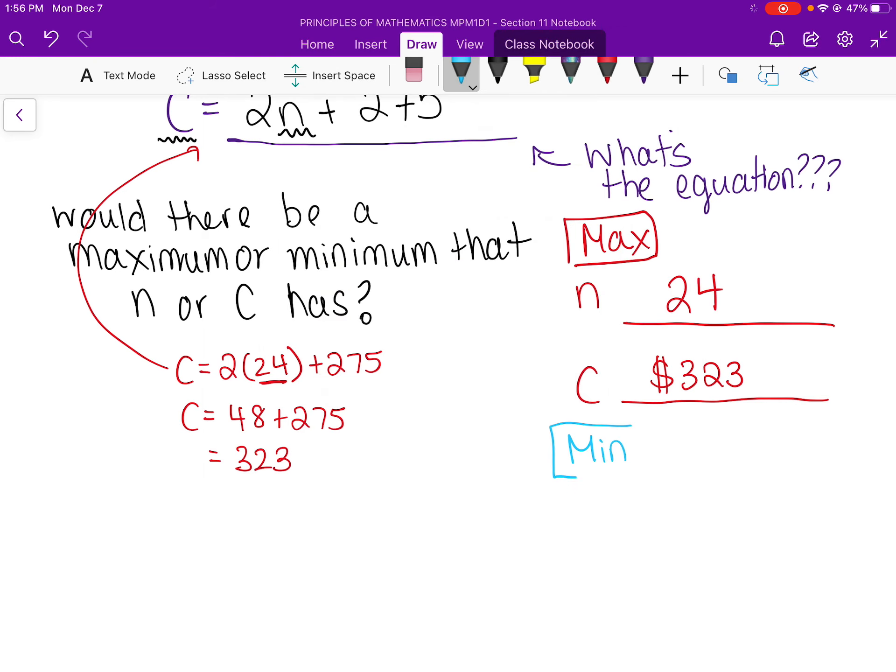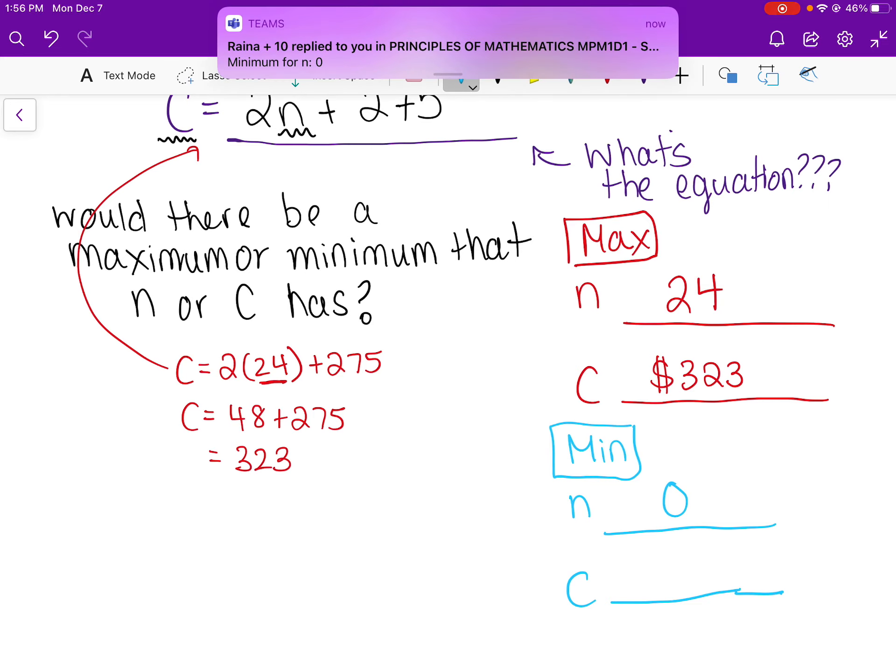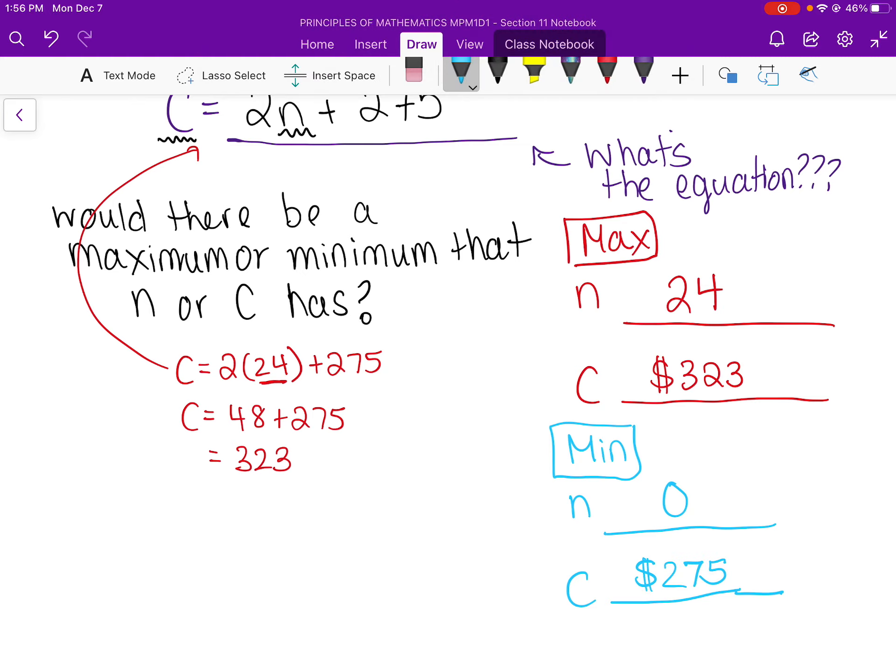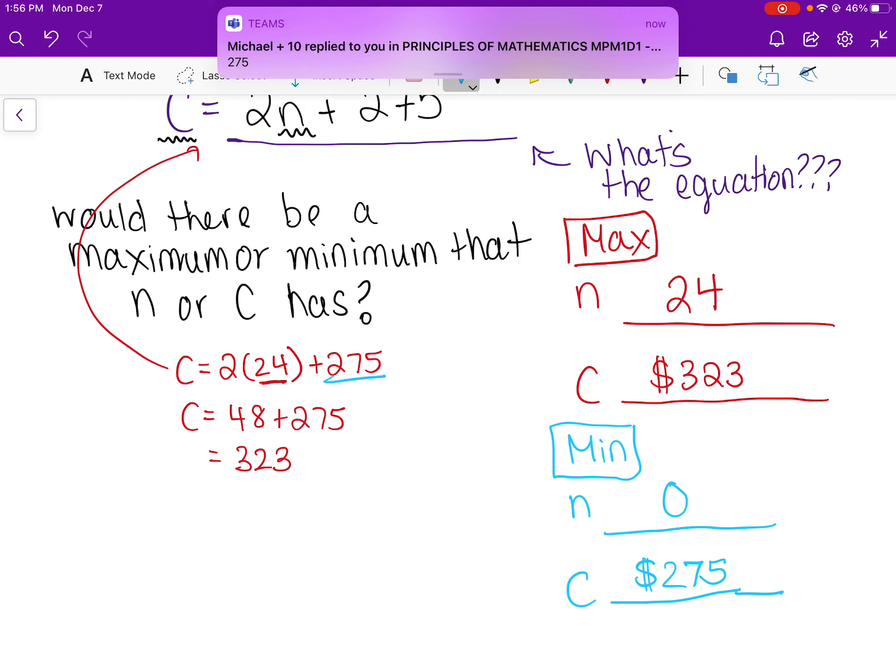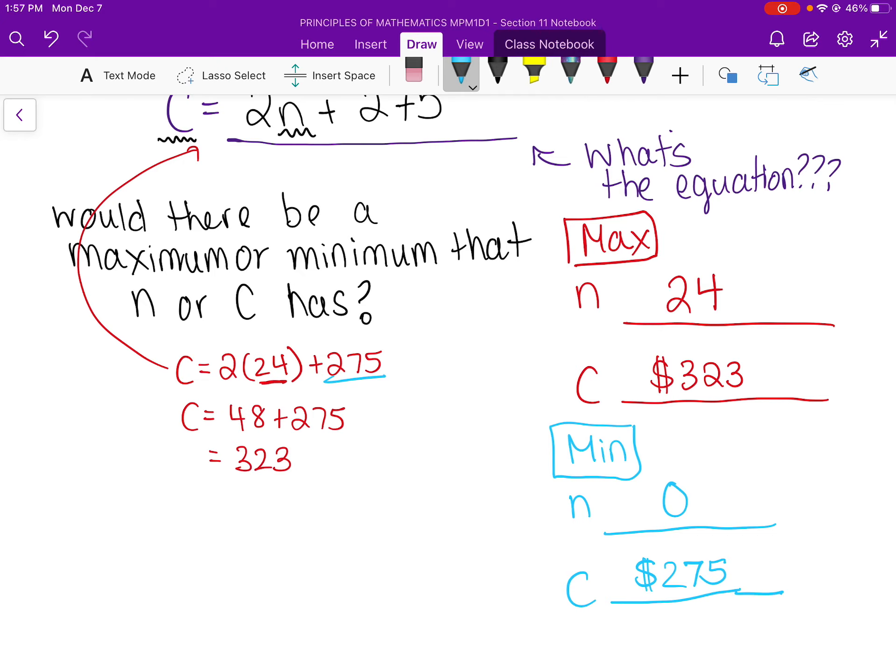So what would be the minimum values on the variables for N and for C? What do you guys think for the minimum? What's the smallest number of seats you could have? Yeah, Raina's saying minimum for N is 0, which is so weird. Like why would you rent a bus and then not even use any seats? But you never know. Something came up. And how much would it cost to rent, to have like no seats used? Yeah, Jake says $275, exactly. Yeah, that's your initial value, the $275. Yeah, Michael and Lizzie, yeah. Nice.